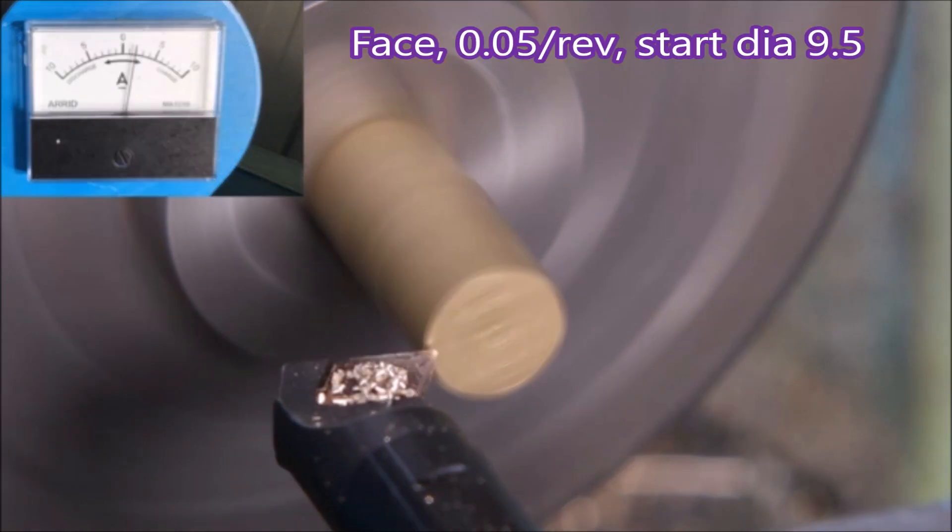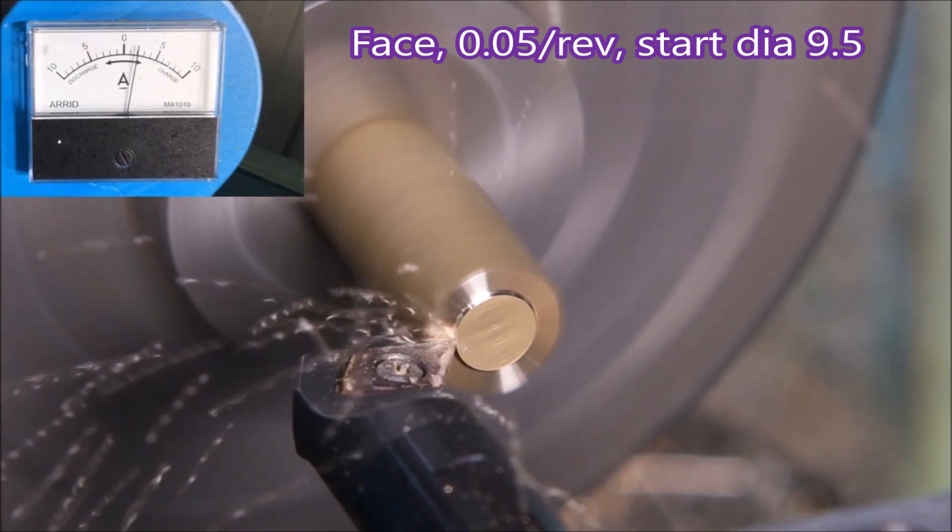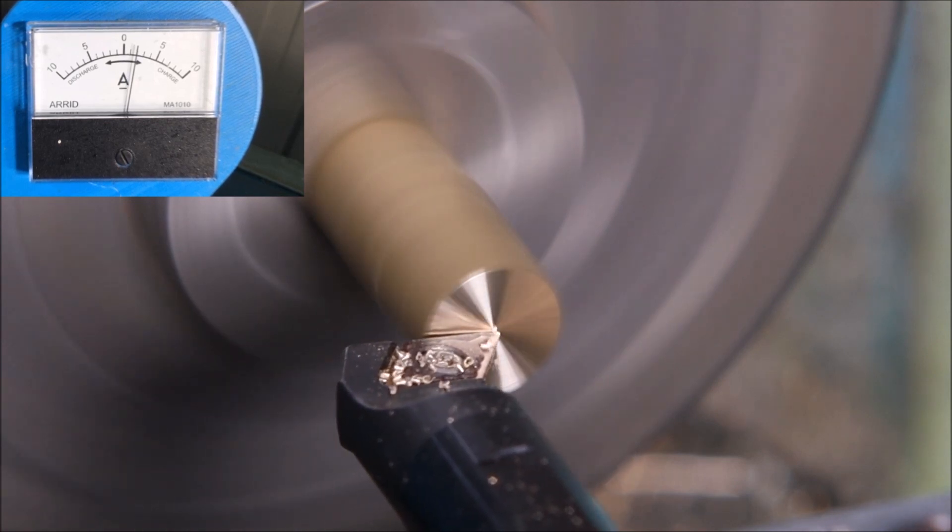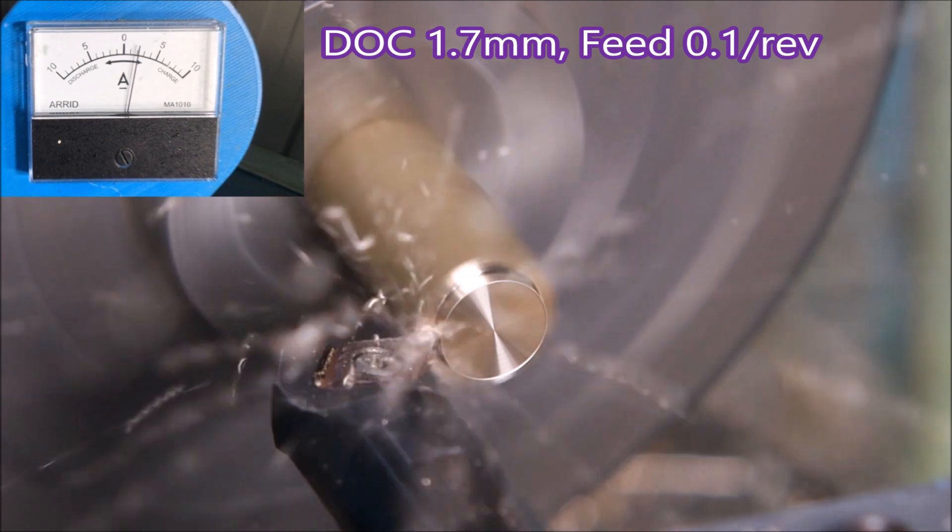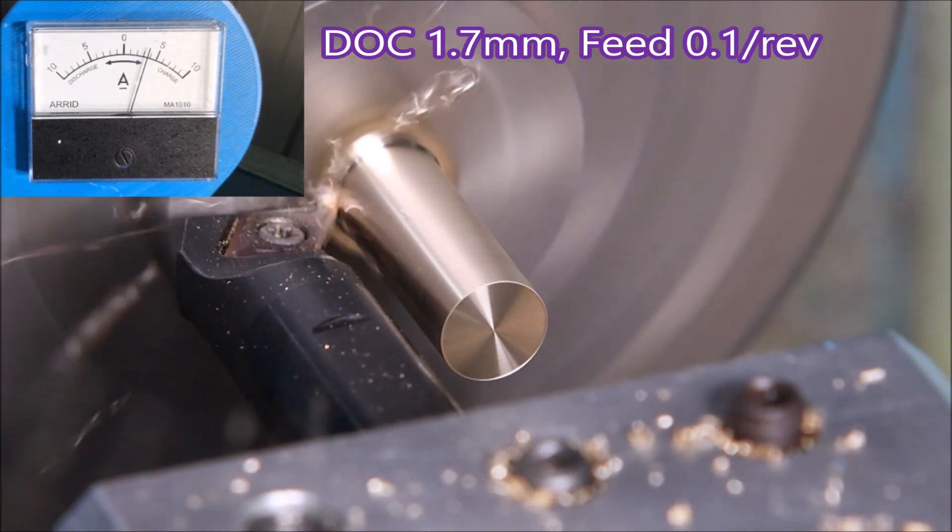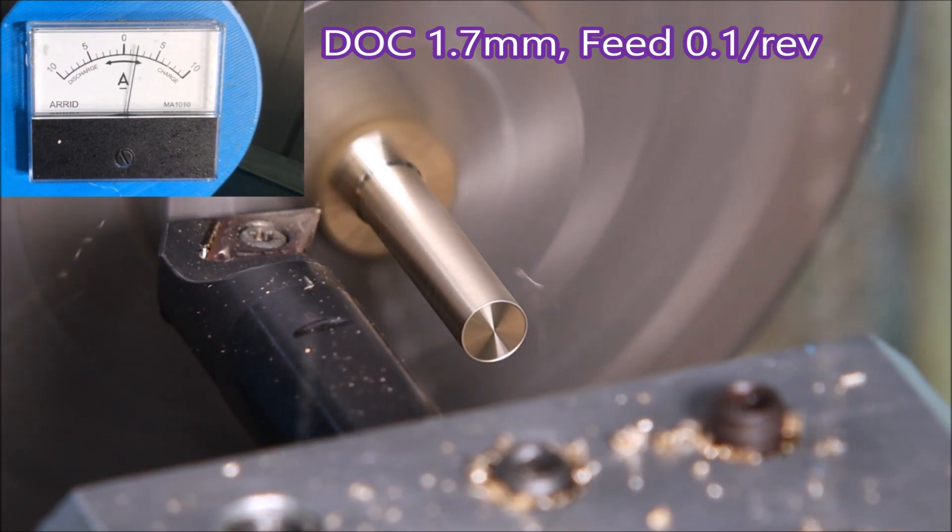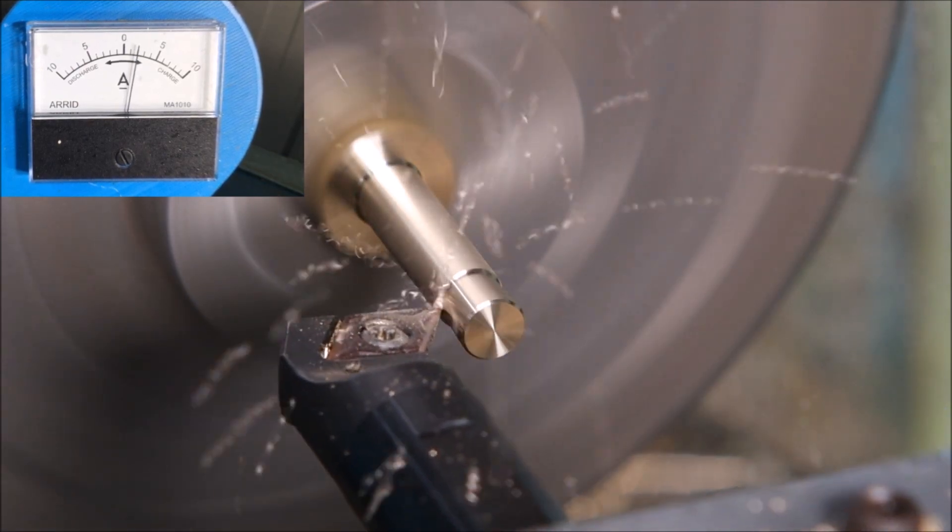Now when I start facing a hex, I like to start below the distance across the flats. So here I'm starting off at 9.5, and then continue with the facing and take it across until it's a bit beyond center to get rid of any center nib. Now there's only two cuts this time, two cuts of 1.7 with a feed at 0.1.